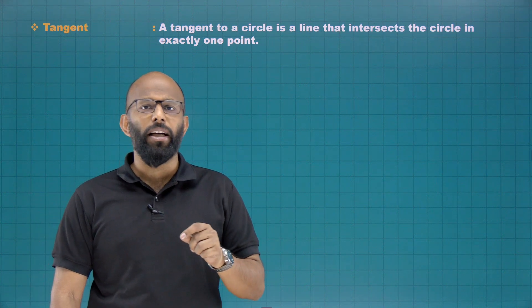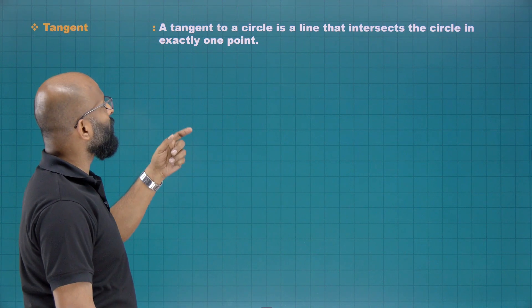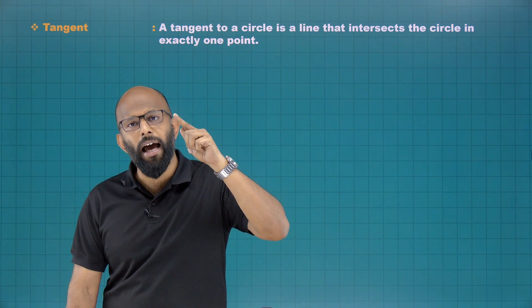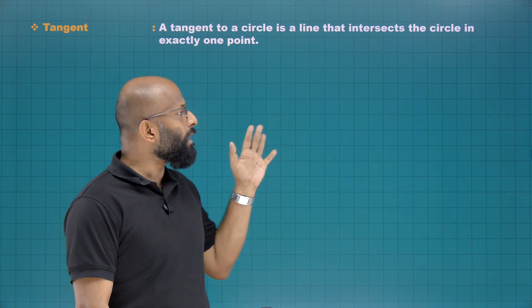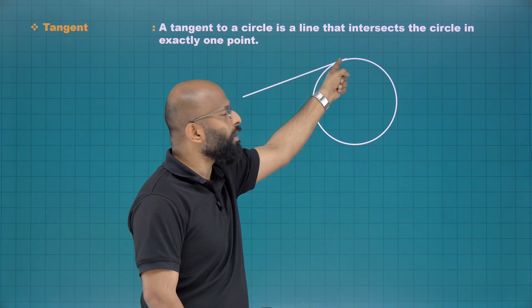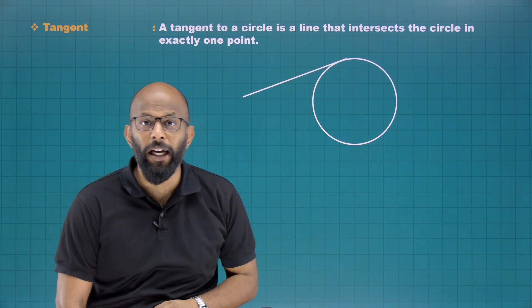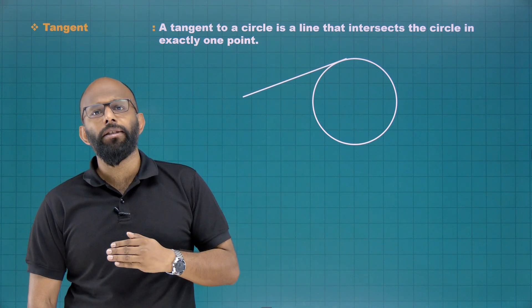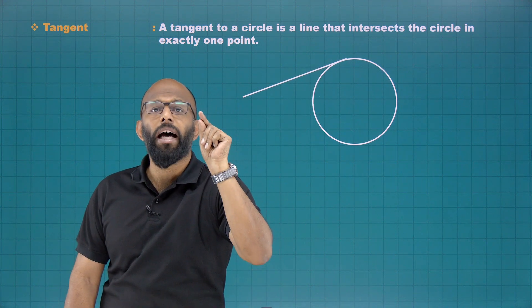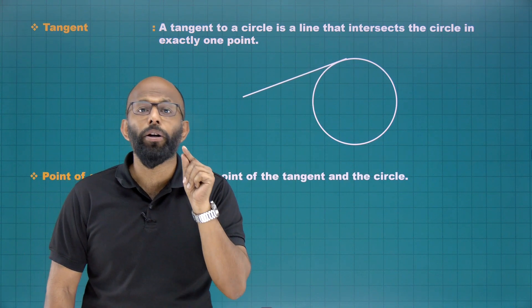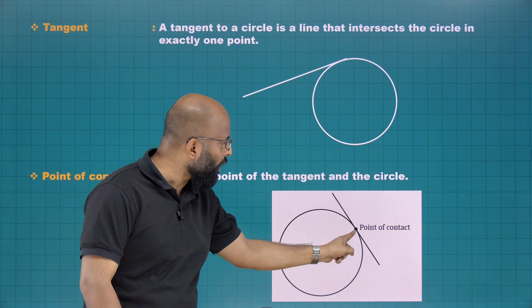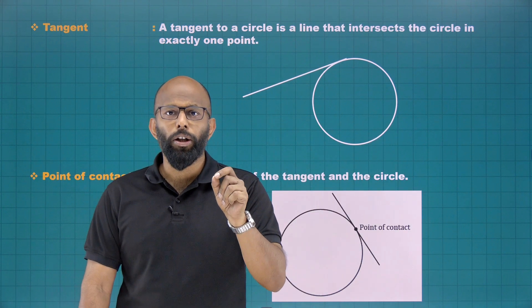After secant, we move to our main concept — the tangent of a circle. A tangent to a circle is a line that intersects the circle at exactly one point, which means the line is exactly touching one point. There is a circle, and there is exactly one touching point — that is called a tangent of a circle. That one touching point is called the point of contact.